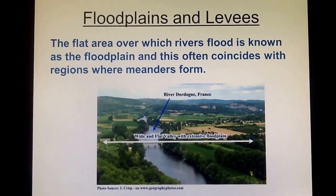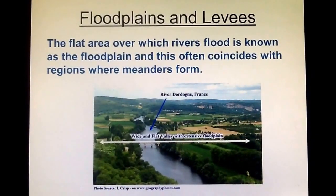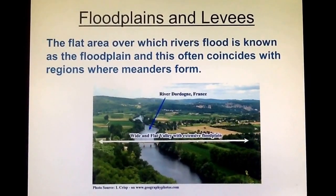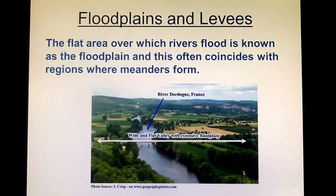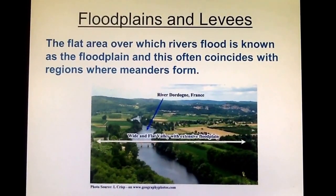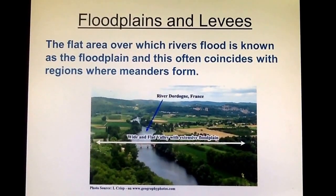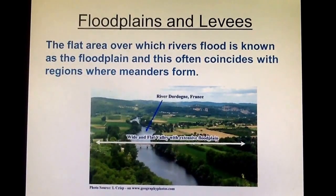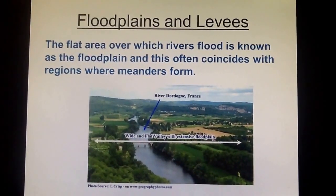Rivers flood quite often, and when they do, the place where the water actually goes — where the water floods out to — is known as the floodplain. This is often quite a wide and flat area of land, and it's also usually a place where you get meanders as well.